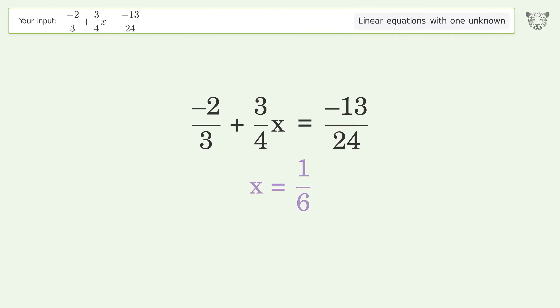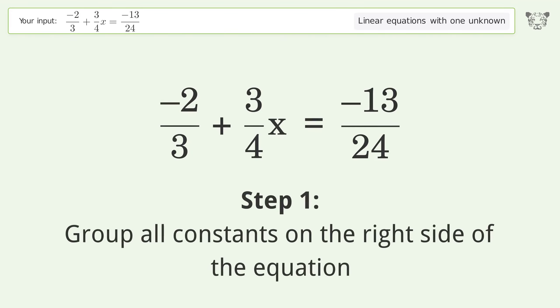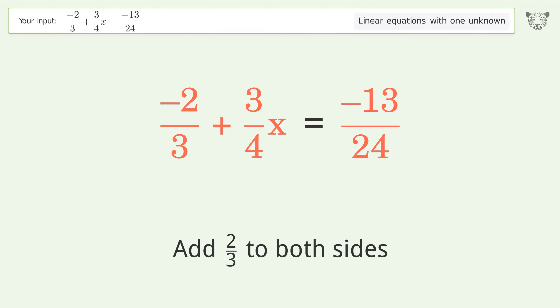Group all constants on the right side of the equation. Add 2 over 3 to both sides.